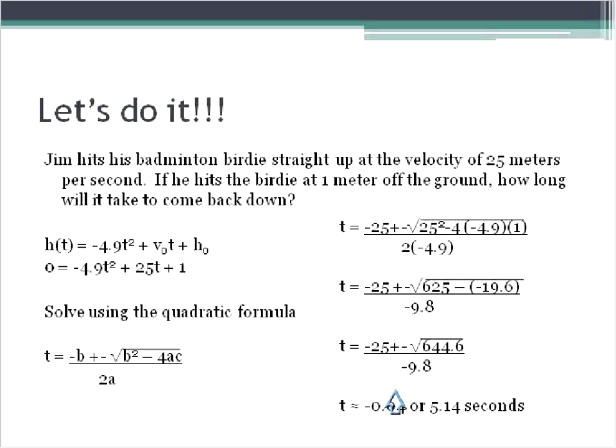In this case, we know that time, you can't really have a negative time, so our time we're going to say is equal to 5.14 seconds. In other words, if Jim hits this birdie up 25 meters per second, it will take 5.14 seconds for it to come back down again.